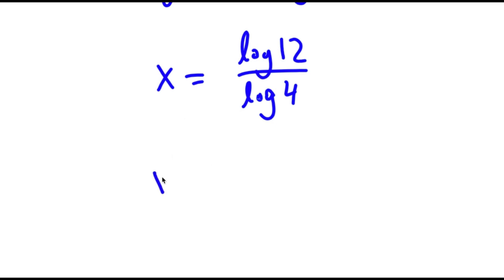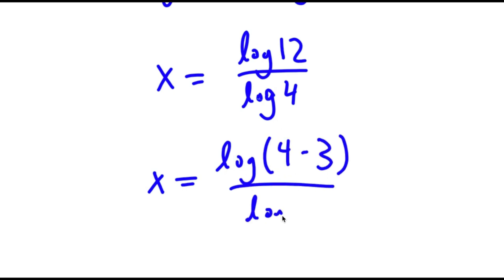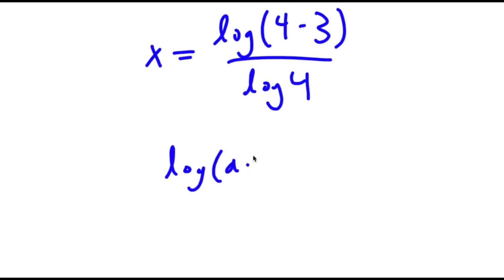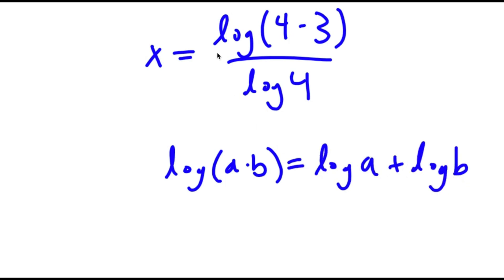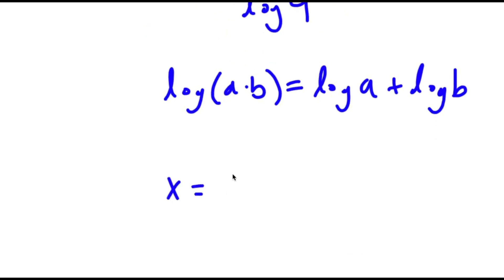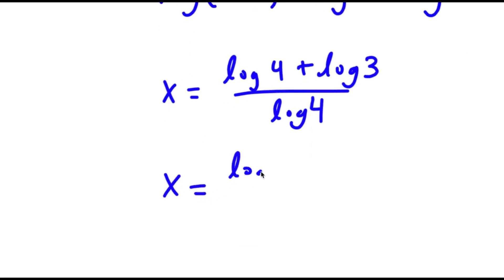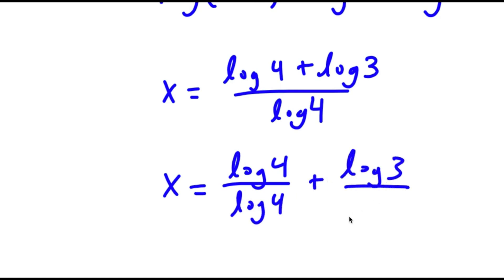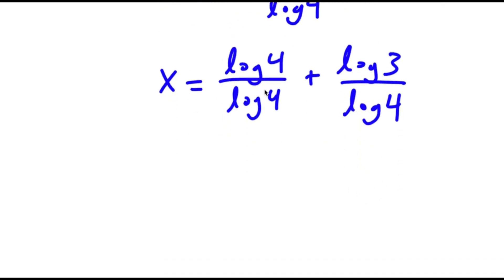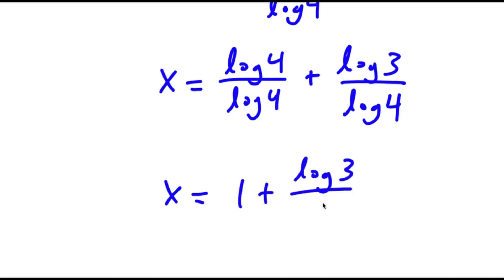Now, log 12 equals log of 4 times 3, over log 4. Using the property that log of a times b equals log a plus log b, log of 4 times 3 becomes log 4 plus log 3, all over log 4. Splitting the fraction gives log 4 over log 4 plus log 3 over log 4. The log 4 over log 4 cancels to 1, leaving 1 plus log 3 over log 4.